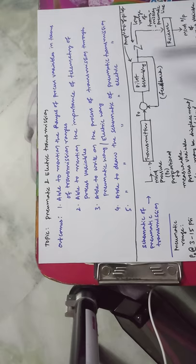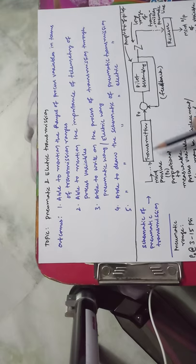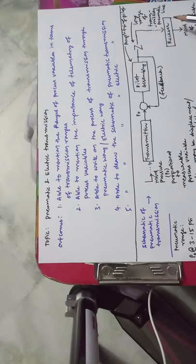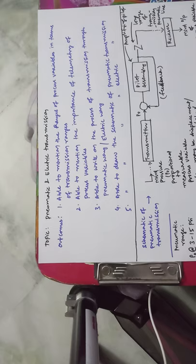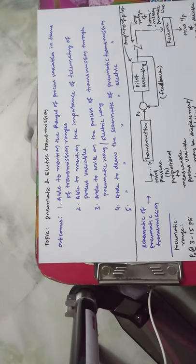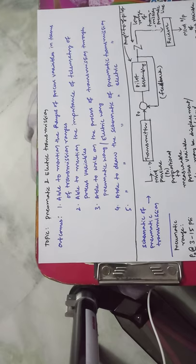The receiver receives the signal transmitted from the transmitter. The transmitter transmits the process variable measured in terms of pressure; the receiver receives this pressure variable as the measured output. The measured output P0-dash is proportional to P0. For example, delta P0-dash is proportional to delta P0, which is proportional to delta T.